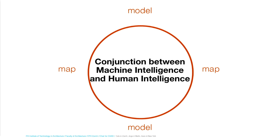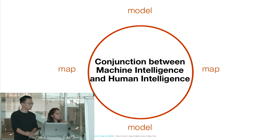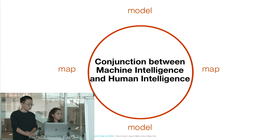For us, map and model is never one or the other — it's always from a map you could get a model, and from a model you could get a map, in rotation. The way you do this is what we call the conjunction between machine intelligence and human intelligence. That's why we are introducing you to algorithms that represent the state of the art of machine intelligence. Three hundred years before Christ, the state of the art was the ruler and the compass; today we have a different approach.